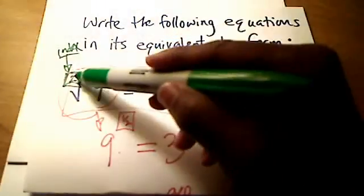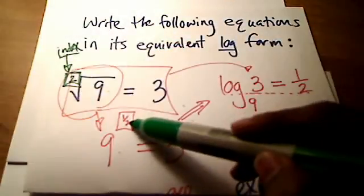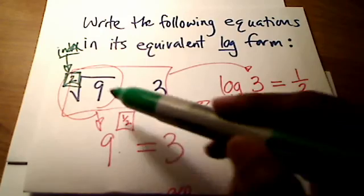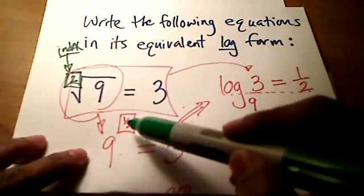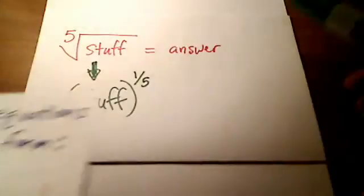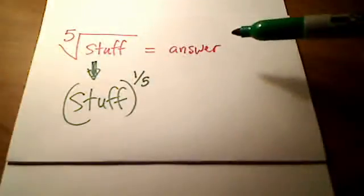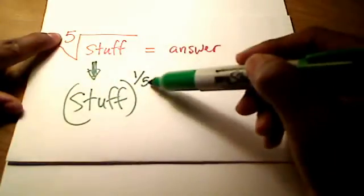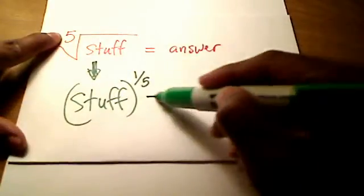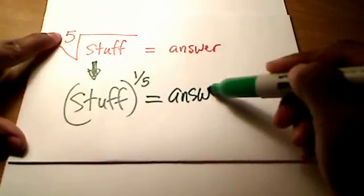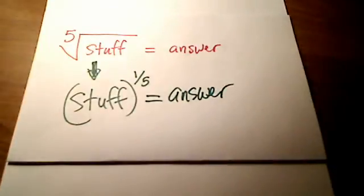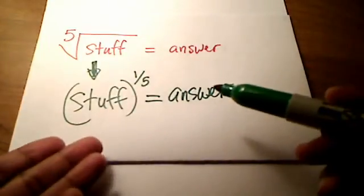So that's why whatever your index is is going to move to the denominator of the exponent. All right, so if this was an understood 2, it moves to the denominator of the exponent. Same thing here. This time it wasn't a 2, so I had to show you that it was a 5, but that 5 moves to the denominator of the exponent, and then equals my answer over here. OK, so now it's probably easier to see that this is really an exponential form.